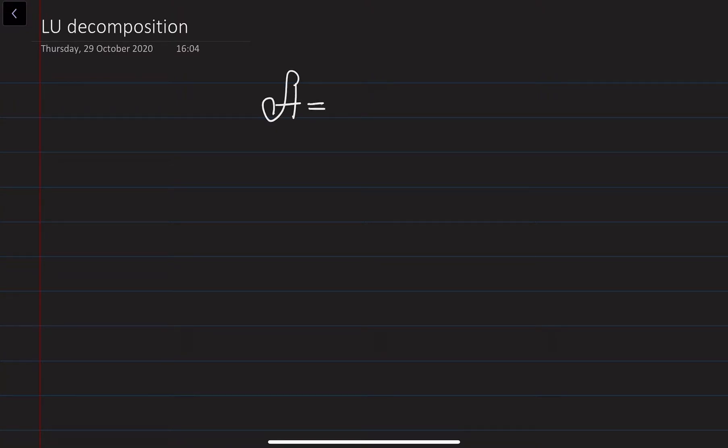Hi, my name is Bokhadar Ahmedov. In this video lecture we are going to start talking about matrix decompositions. One of them is going to be the LU decomposition. The idea is to write down the matrix A as the multiplication of two other matrices, L and U, where L is going to be the lower triangular matrix and U is going to be the upper triangular matrix.